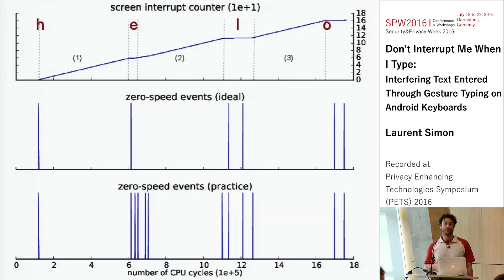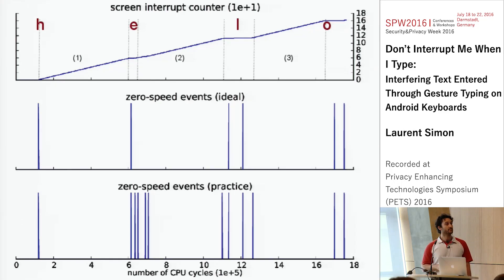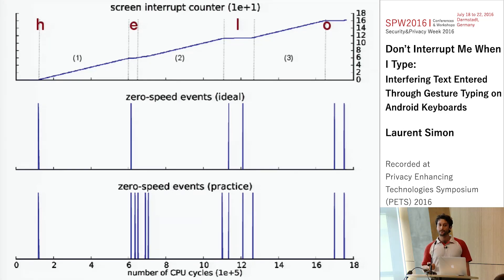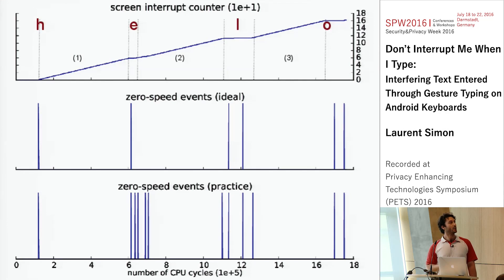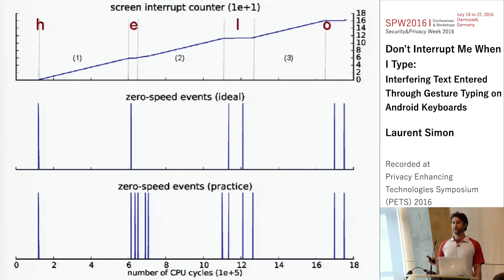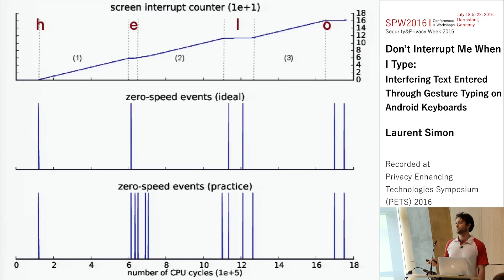This graph shows the total number of hardware interrupts the Android kernel receives when a user types 'hello.' Between letters the count grows linearly, but for each letter there are little plateaus. These plateaus correspond to the time when the finger has virtually null speed — it's not moving, so the screen need not report any updates to the kernel, and the total number of hardware interrupts remains constant. I refer to these as zero speed events. We use the position of those zero speed events as one of the features to train our classifier.